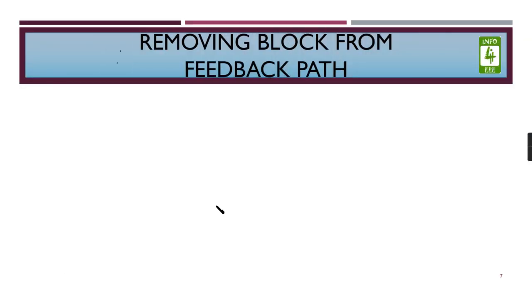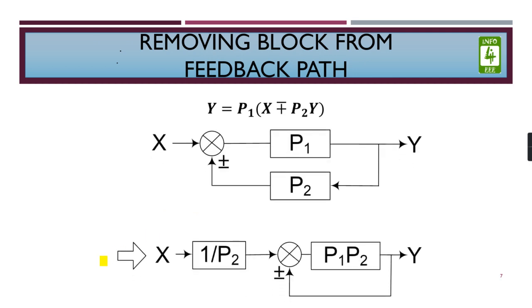Coming to the next point, removing block from the feedback path. So this is the reverse case of the feedforward path. Now here in this case, what we will do is we will use this block and take this block and we will divide it here and we will multiply it here. This is the reverse of the feedforward path case.